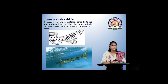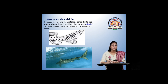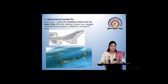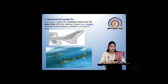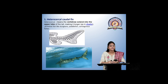Heterocercal caudal fin: in this, both lobes — that is, the upper lobe and lower lobe — are unequal. Because the vertebrae extend into the upper lobe, it looks longer compared to the lower. It is seen in paddlefish and cartilaginous fishes.